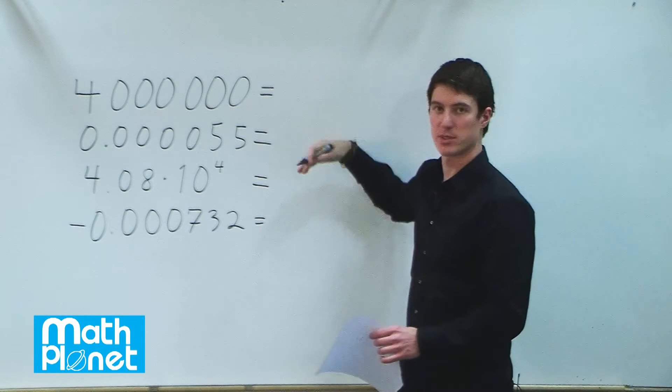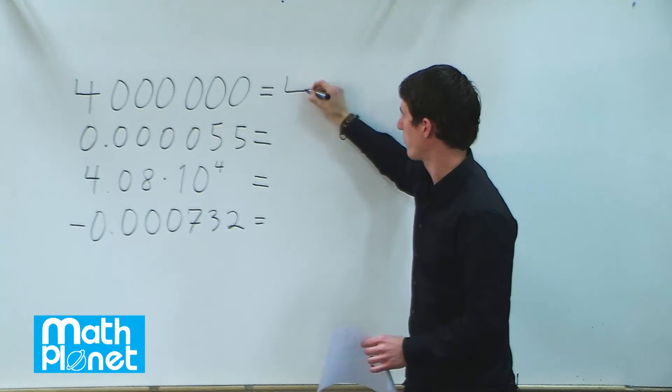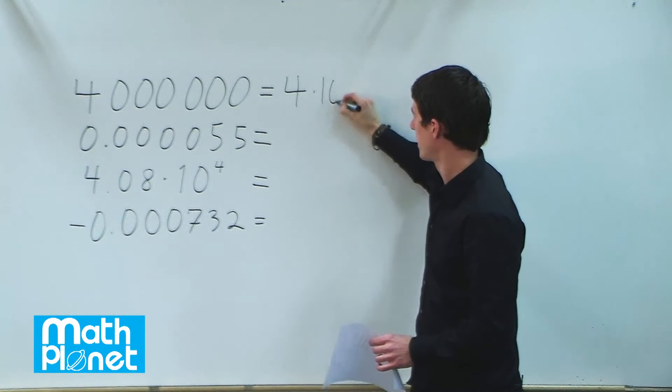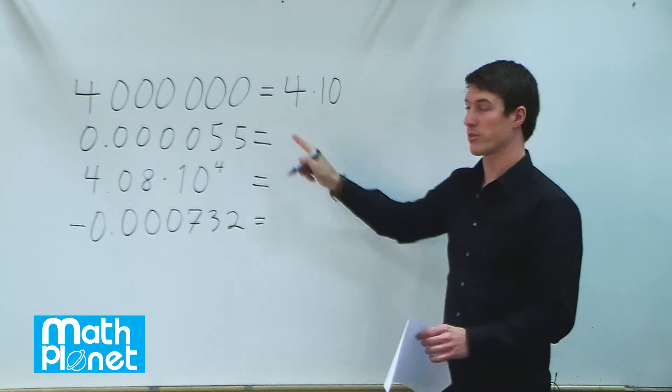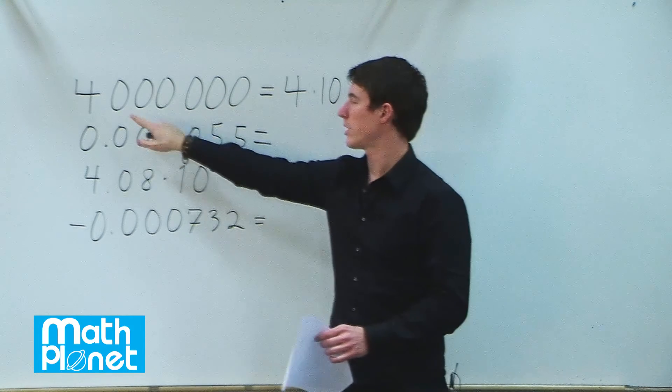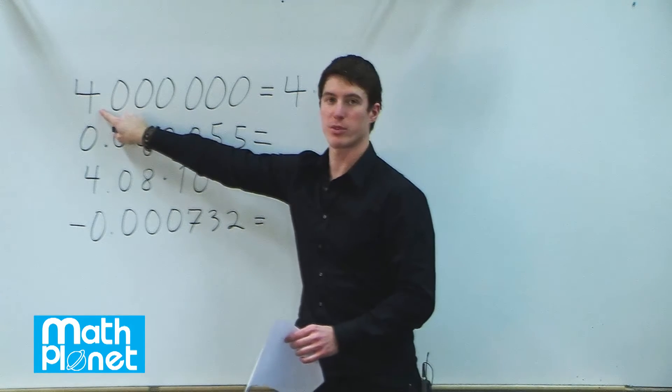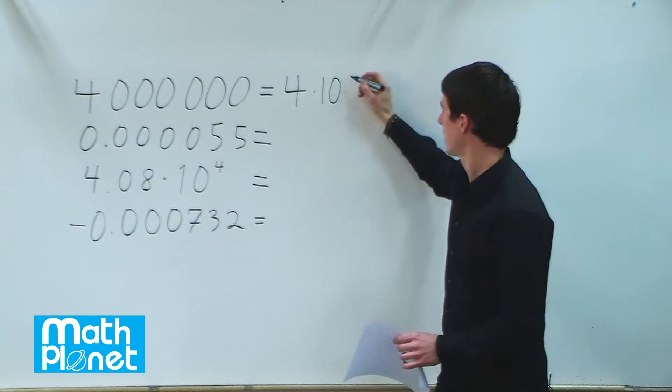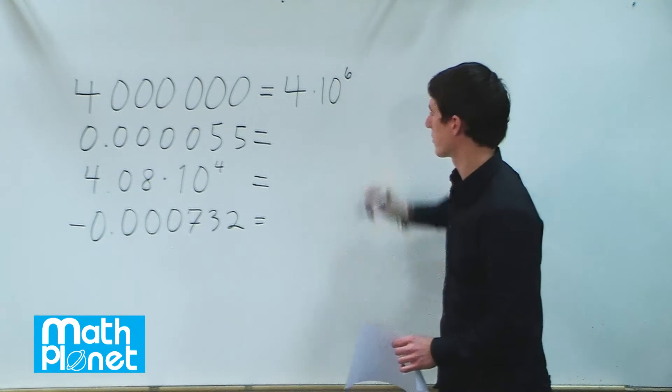So we need to say 4 times 10 to some power. That power is the number of zeros or the number of places after the first term, and there are 6 of them. So we say 4 times 10 to the power of 6.